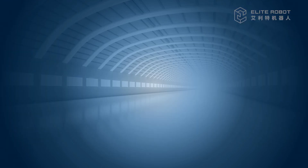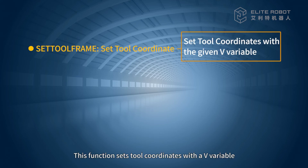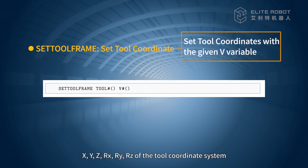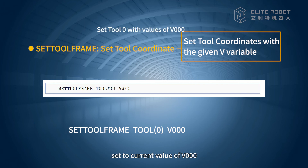Set Tool Frame. This function sets tool coordinates with a V variable, meaning it sets the value of the V variable to X, Y, Z, Rx, Ry, Rz of the tool coordinate system. Example: Set Tool Frame tool(0), V000 — the first set of tool coordinates will be set to the current value of V000.